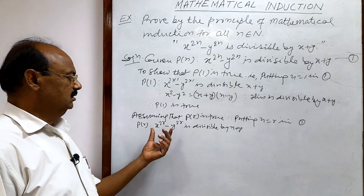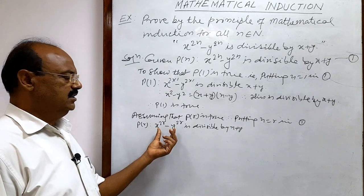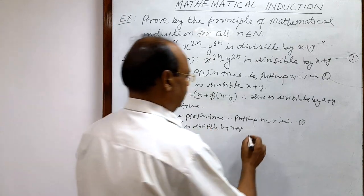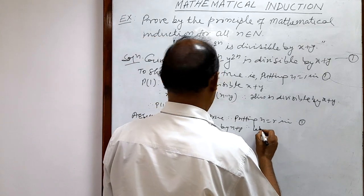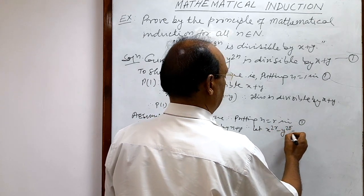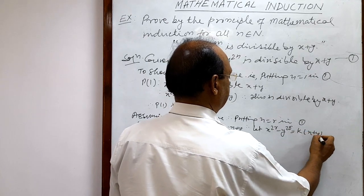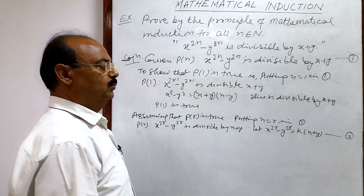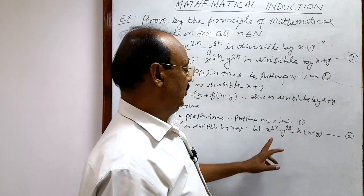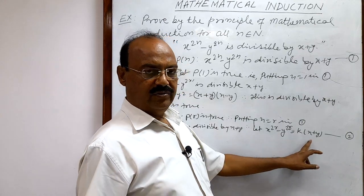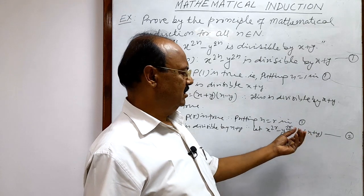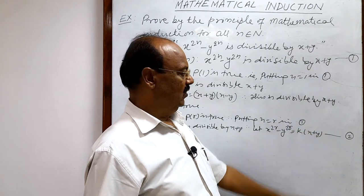Since x to the power 2r minus y to the power 2r is divisible by x plus y, x plus y must be a factor. So let x to the power 2r minus y to the power 2r equal k times x plus y, where k is some positive integer or expression. This is relation number 2.